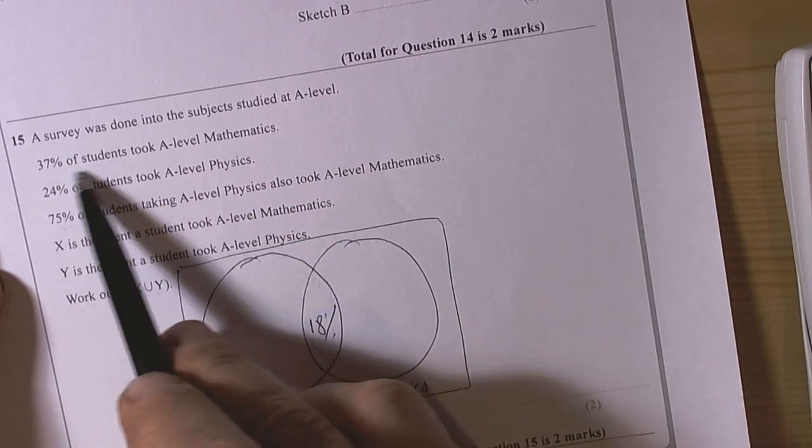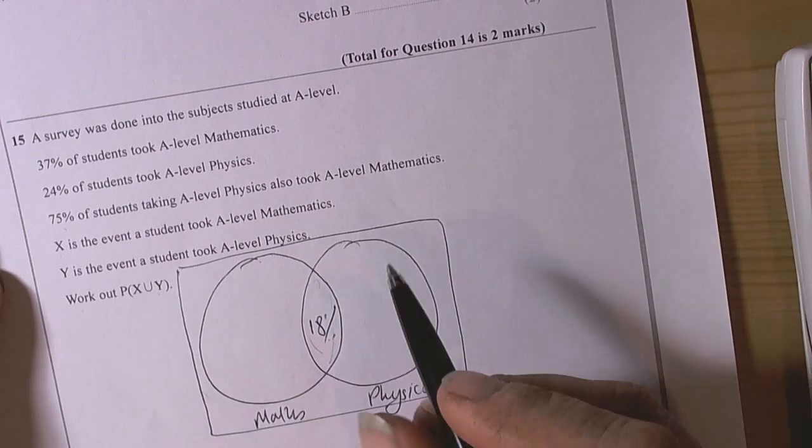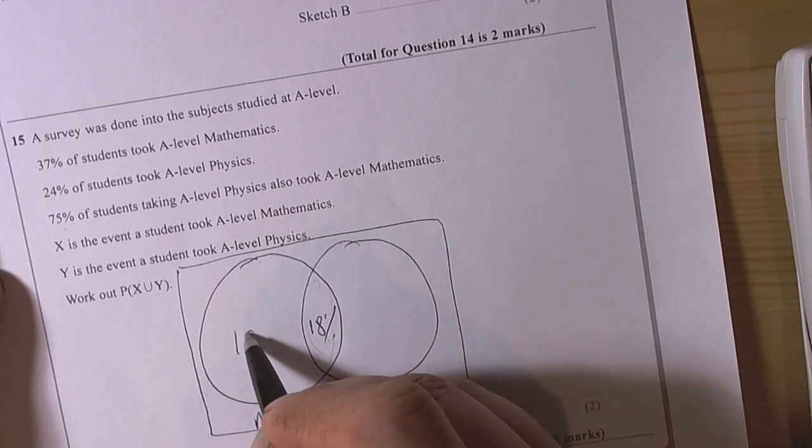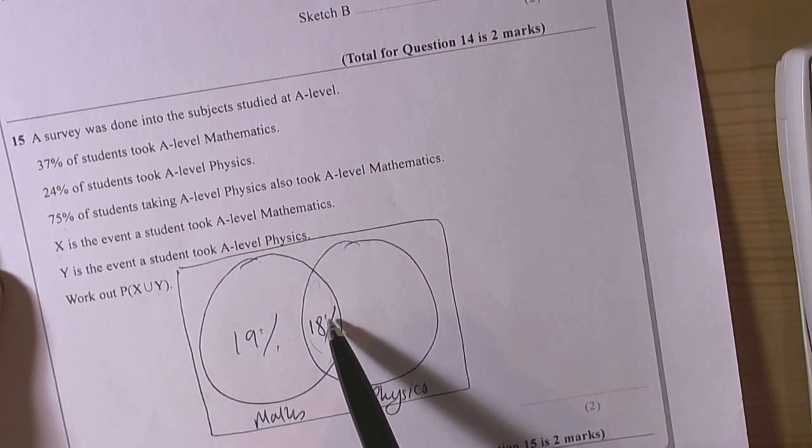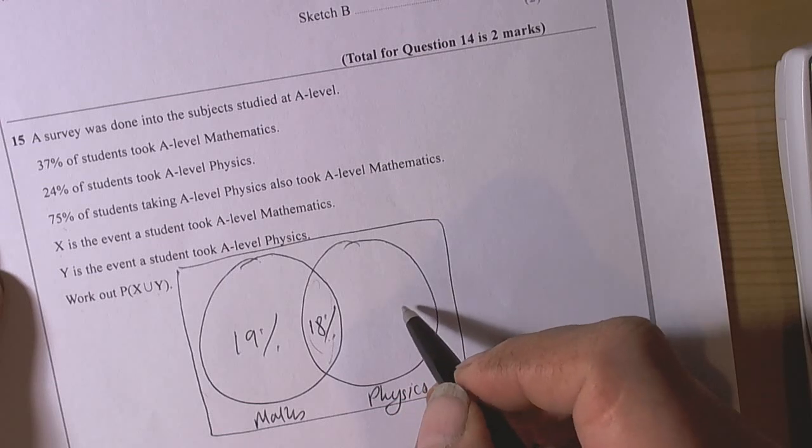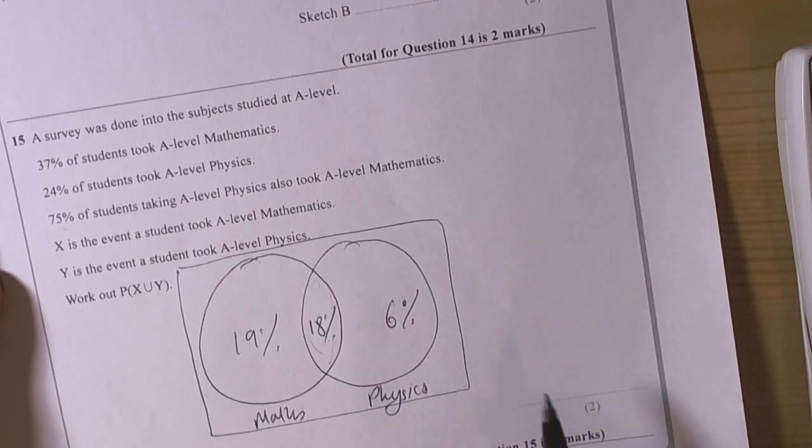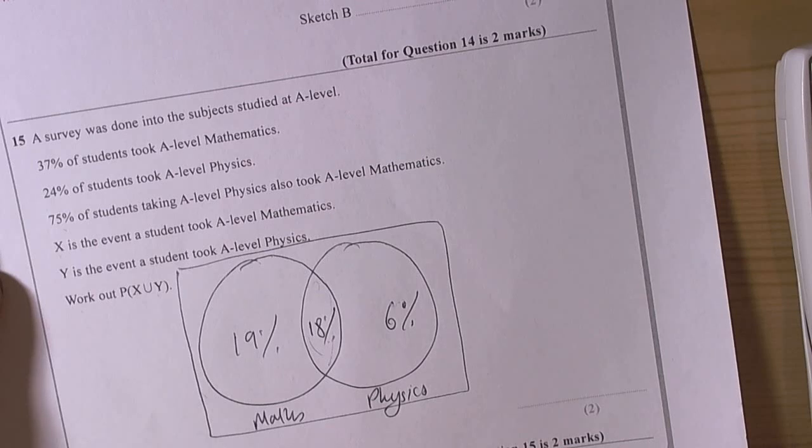So in the maths we had 37% of students took A level maths, well 18% of the maths is a number in here. So 37 take away 18 is 19, so 19% there. And if 18% are in here and 24% took physics then we literally want to get, so look 24 take away 18 is 6%.